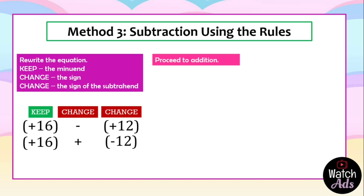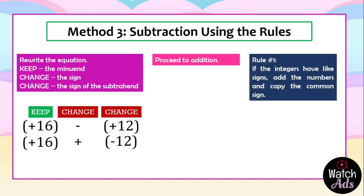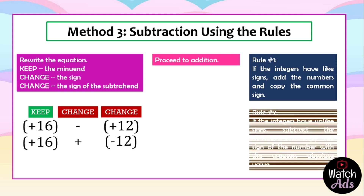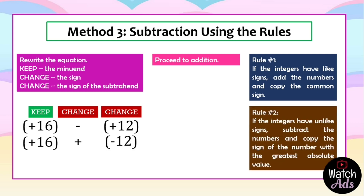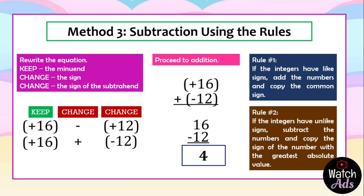For our next step, we proceed to addition. Remember our first rule: if the integers have like signs, add the numbers and copy the common sign. For the second rule, if the integers have unlike signs, subtract the numbers and copy the sign of the number with the greatest absolute value. Now, 16 plus negative 12 — unlike signs — we subtract: 16 minus 12 is equal to 4. Which is greater, 16 or 12? 16. The sign of 16 is positive. The answer is positive 4.